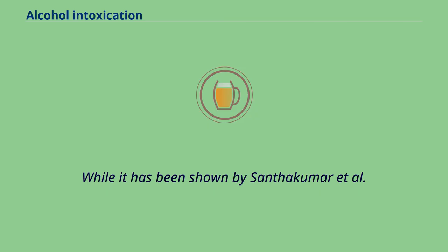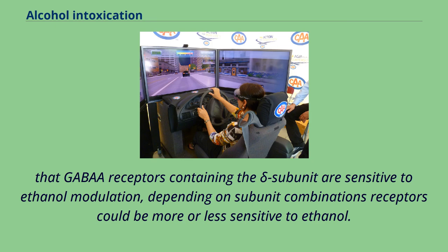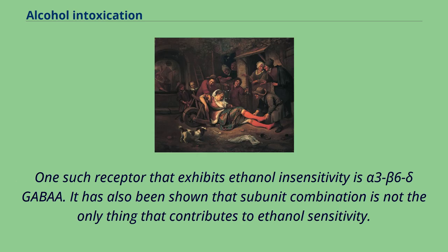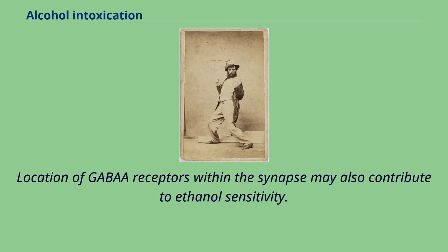While it has been shown by Santhakumar et al. that GABA receptors containing the delta subunit are sensitive to ethanol modulation, depending on subunit combinations receptors could be more or less sensitive to ethanol. It has been shown that GABA receptors that contain both delta and beta-3 subunits display increased sensitivity to ethanol. One such receptor that exhibits ethanol sensitivity is alpha-3-beta-6-delta-GABA. It has also been shown that subunit combination is not the only factor; location of GABA receptors within the synapse may also contribute to ethanol sensitivity.